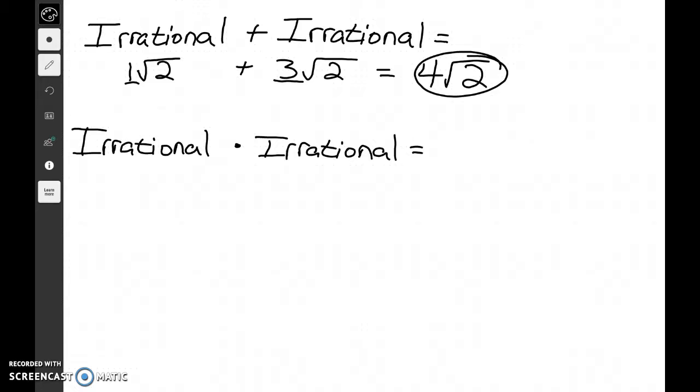So 4 on the square root of 2 is still an irrational number. Any time you add irrational numbers, you're just going to get a bigger irrational. So irrational plus irrational is equal to irrational.